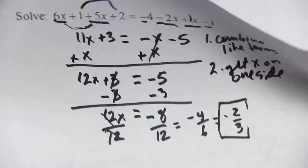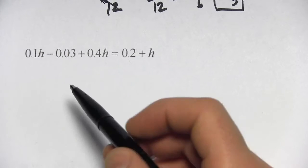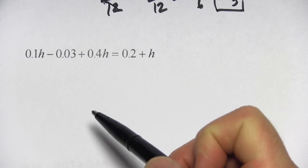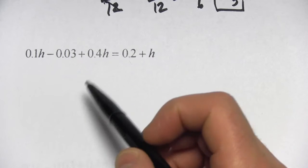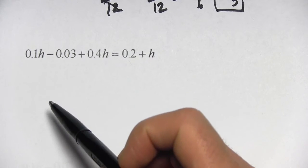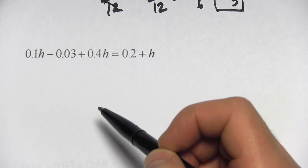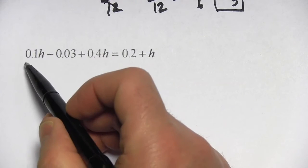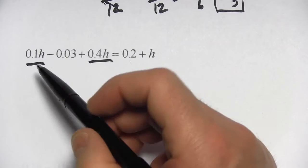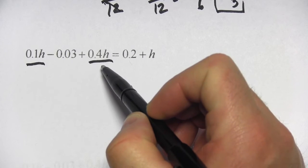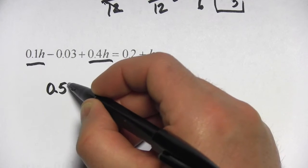Let's try another tricky type of equation. This one is tricky because it has decimals, and if this becomes difficult, we'll just use our calculator to solve the problem. We're going to do the same basic steps. We're going to first combine like terms on each side. Here we have 0.1h and here we have 0.4h. 0.1 plus 0.4 is 0.5, so we have 0.5h.